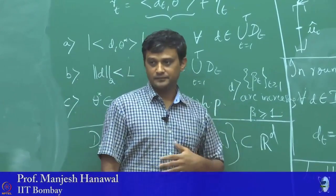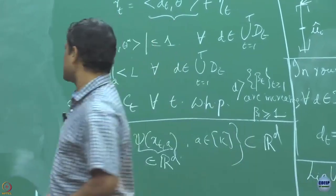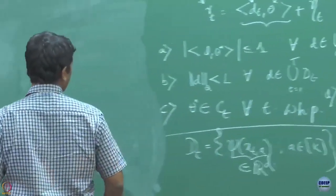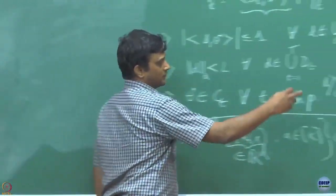I am going to construct a confidence set C_t. To define C_t I need the B_t's, and I am saying that the B_t's are all increasing with β_1 being greater than or equal to 1. Now let us do regret analysis for this algorithm.